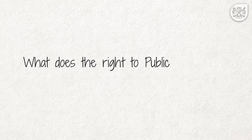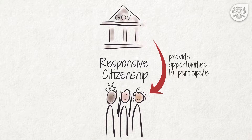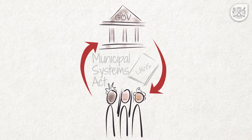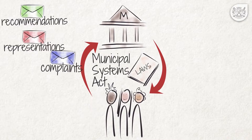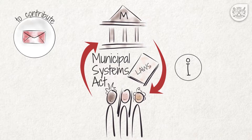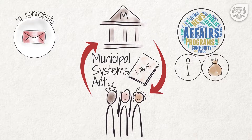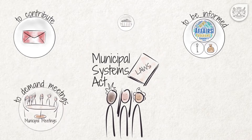What does the right to public participation mean for community members? Responsive citizenship does not only require the government to provide opportunities for people to participate in governance, it also requires the people to fulfill their responsibilities. The Municipal Systems Act grants us the rights to contribute to municipal decision-making processes, to submit recommendations, representations and complaints either orally or in writing, to receive prompt responses to our communications, to be informed of decisions of municipal office bearers that affect us, to be informed of the affairs including its finances of the municipality, to demand that municipal meetings are open to the public, are fair and free of personal interest, and to use and enjoy public facilities and have access to municipal services.